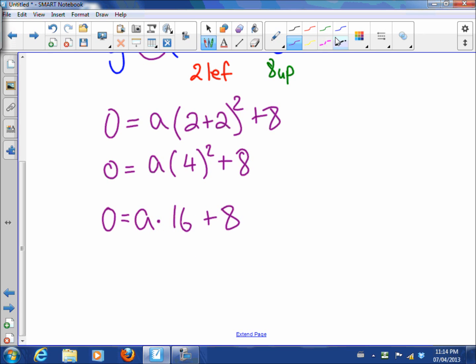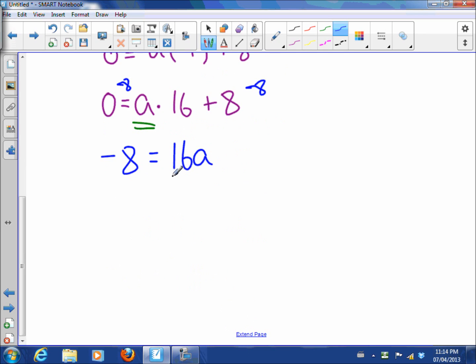So now we have to isolate a. So what we're going to do is we're going to subtract 8 from both sides. So negative 8 is 16a and then we're going to divide by 16. So that makes a negative, if we reduce this fraction, 1 over 2.